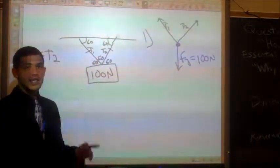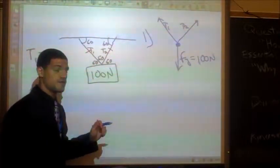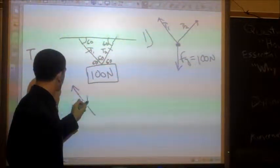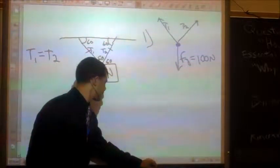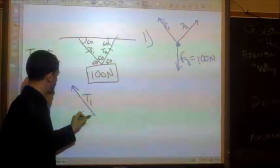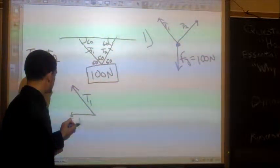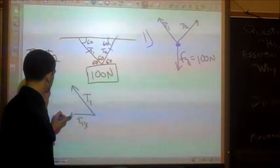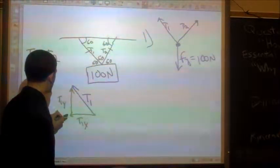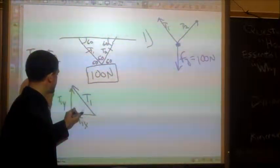So let's look at these as two different triangles. Let's take t1 first. Okay, so we draw t1 over again. And we know that this direction is t1 of x, and this direction is t1 of y, and we know that this is 60 degrees.